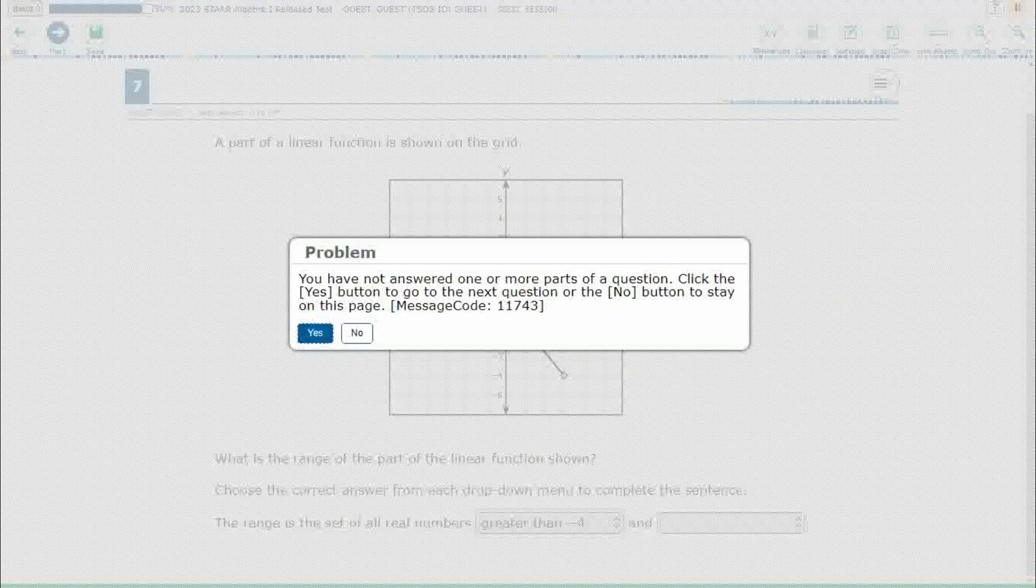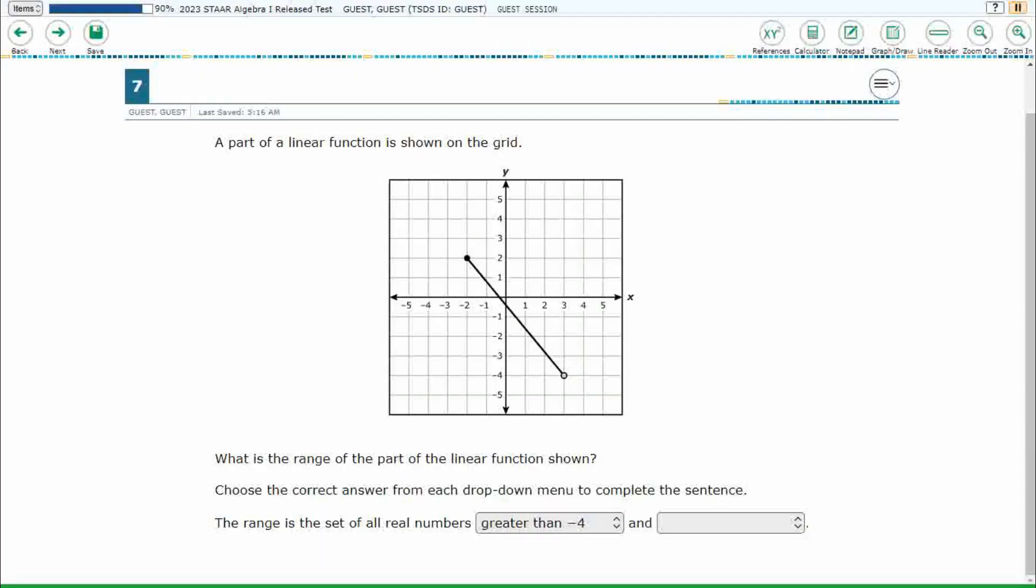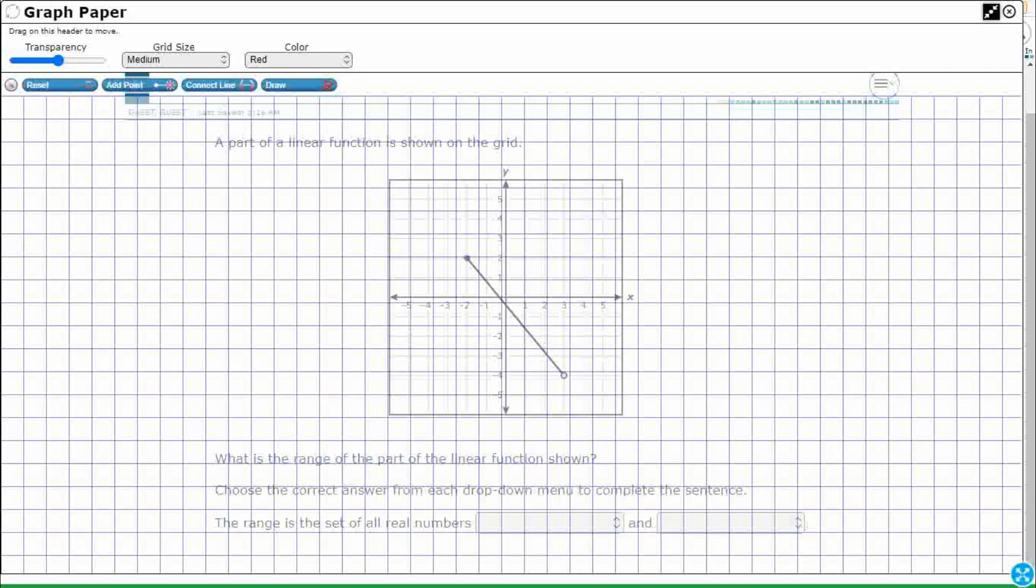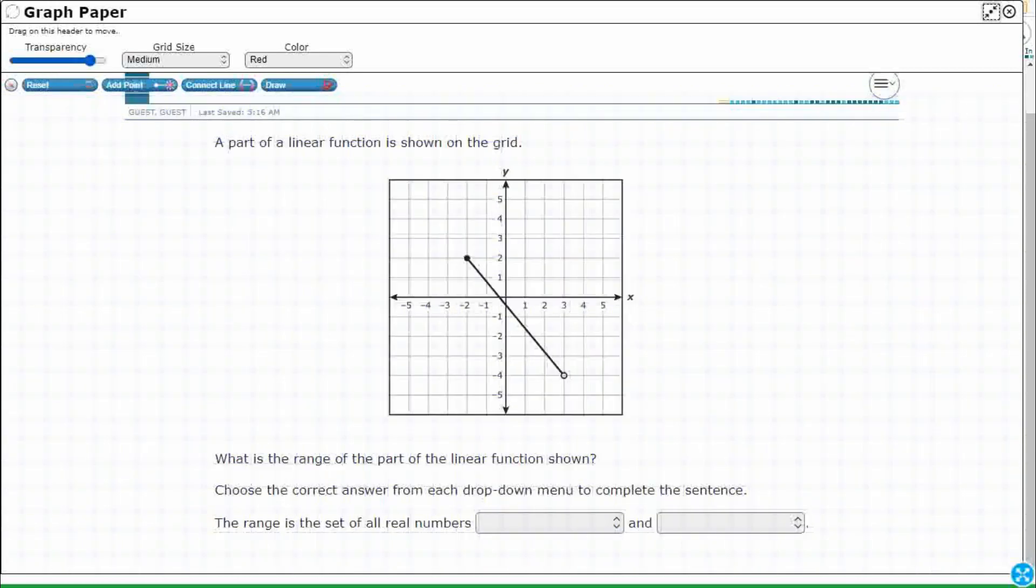It is going to say you have not answered one or more parts. You can still say yes if you want to, but it will pop up an error message if you only choose one answer. This is a two-point problem, one for each answer. Let's take a look at what the problem is asking us to do.